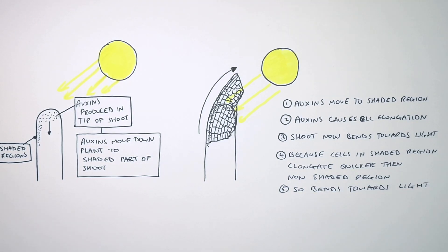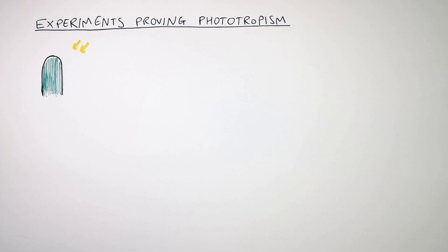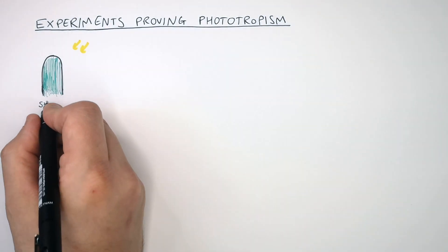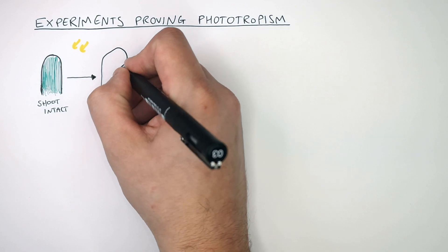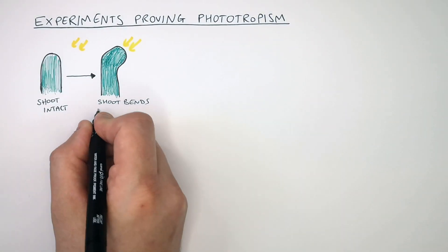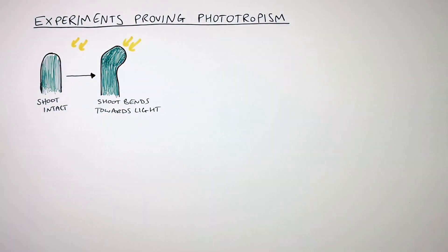I'm now going to explain how phototropism controlled by auxins in the shoots of plants was proven. If the shoot is intact, the shoot of a plant is going to bend towards the light. This is because the auxins move down the plant to the shaded region and cause cell elongation in the shaded region, causing the shoot to bend towards the light.